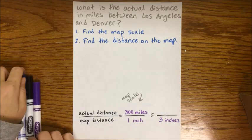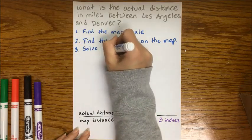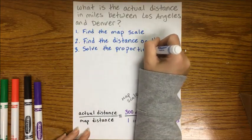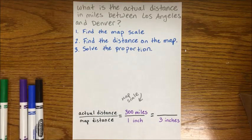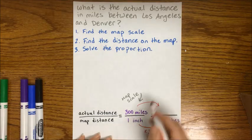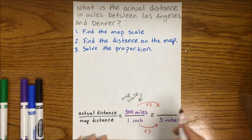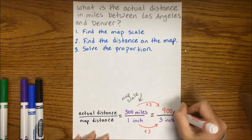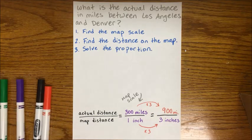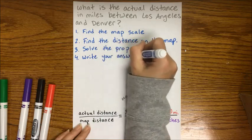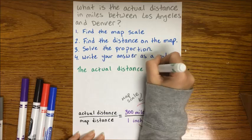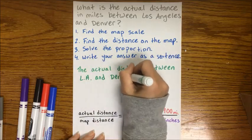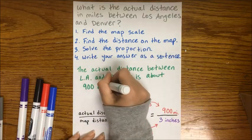Once we have our proportions labeled and set up, the last step is to solve it. We just need to jump from one ratio to the next with a scale factor — for this one we're going to multiply by 3 on the bottom and the top. So 3 times 300 is 900 miles. The actual distance between Los Angeles and Denver is about 900 miles.